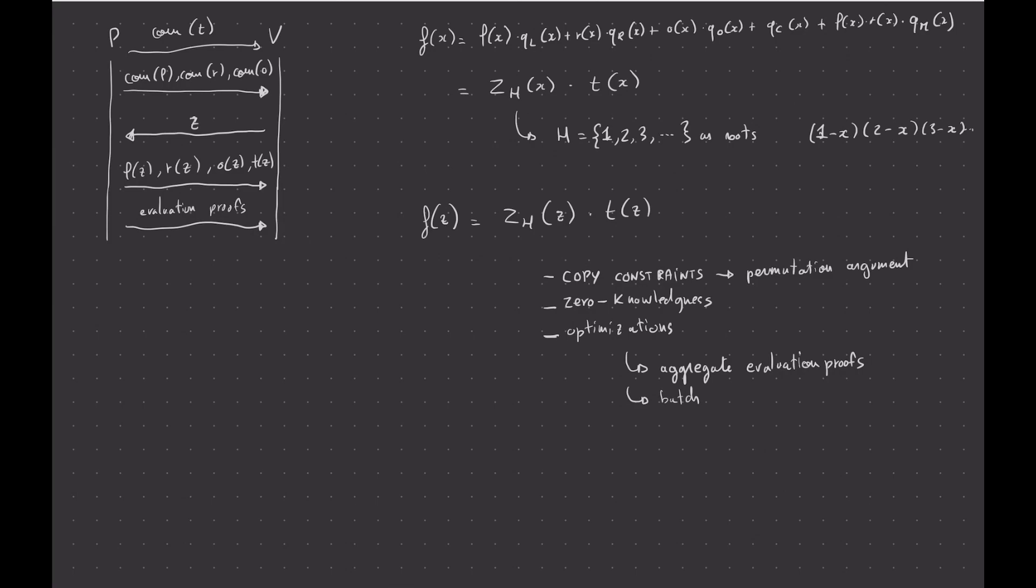But obviously, really obviously, the copy constraints, I think, is the obvious thing to learn next, because that's one and the other half of the PLONK paper.